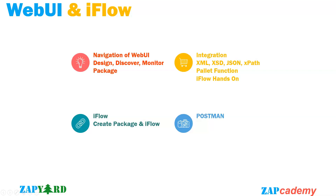iFlow is one of the pillars of SAP CPI and we need to have crystal clear clarity on this topic. We will learn about the basic elements of iFlow and then learn about creating a package and iFlow. Once we have some idea of iFlow, we will cover the integration path. We will check the basic components like XML, XSD, JSON, and XPath. Next, we will cover the beginner palette functions and then create our very first iFlow.